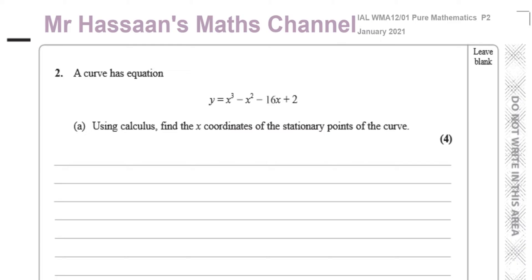First of all, we should understand what a stationary point is. A stationary point is a point of zero gradient. It could either be a maximum, it could be a minimum, or it could be a point of inflection where the gradient reaches zero and then goes back up again, or goes down to zero gradient and down again. Those are all called stationary points where the gradient becomes zero.